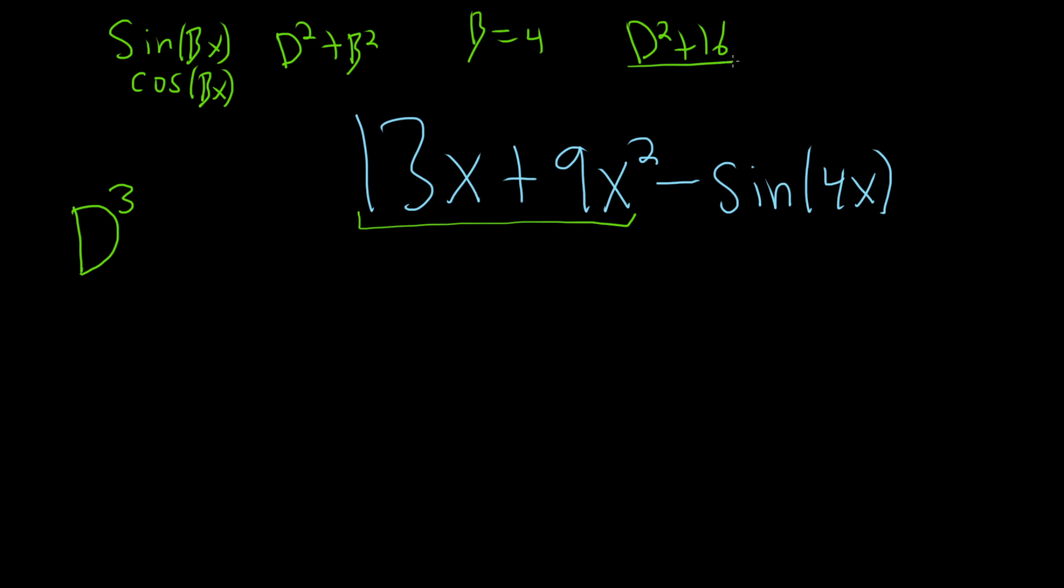So d squared plus 16 will annihilate this piece. d cubed will annihilate this piece. So to annihilate both, you just take the product. So d cubed, d squared plus 16. And that will annihilate this function.